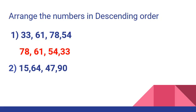Now let us arrange these numbers in descending order again. We have numbers 15, 64, 47 and 90. Which one is the greatest number here? 90. After 90, what will be the next greatest number? 64. After 64, the next number will be 47, and after 47, the next number will be 15, which is the smallest number. The descending order of the given numbers is 90, 64, 47 and 15.